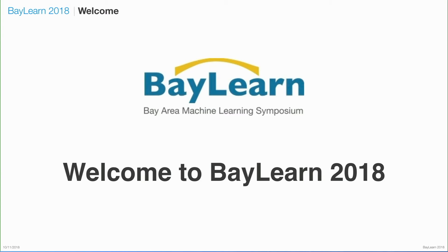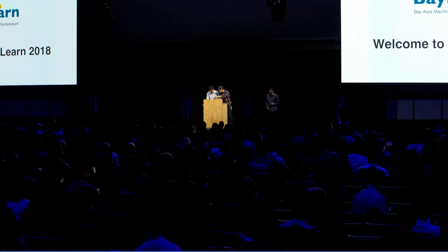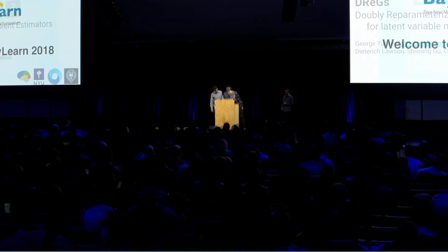This is George Tucker, and a team of authors from Google Brain and Google DeepMind are going to be talking about doubly reparameterized gradient estimators. This is joint work with Dietrich, Shane, and Chris.